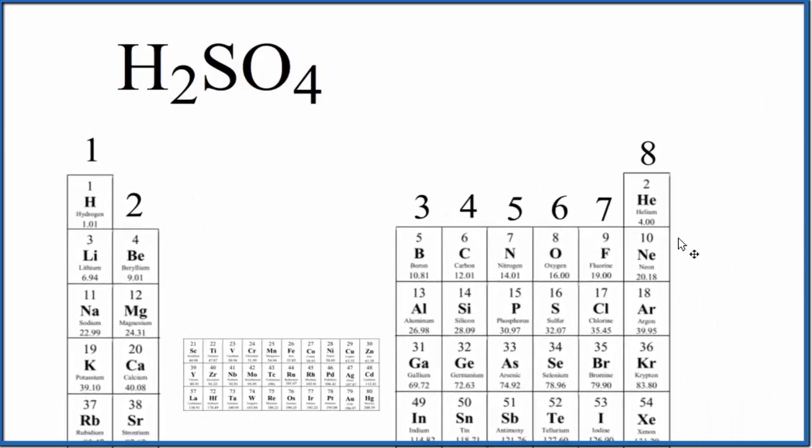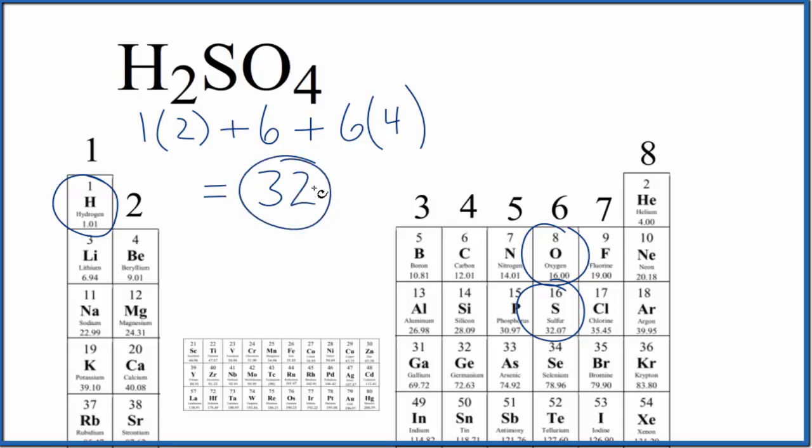So on the periodic table, we find hydrogen right here in group one. That is one valence electron. We have two hydrogen atoms. Sulfur over here, that's in group 16, sometimes called 6A. These have six valence electrons, and oxygen right above sulfur, it has six valence electrons, four oxygen atoms. So when we do the math here, we end up with 32 total valence electrons for the H2SO4 Lewis structure.